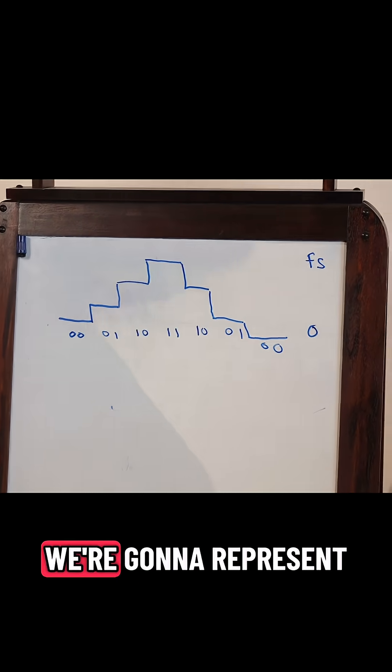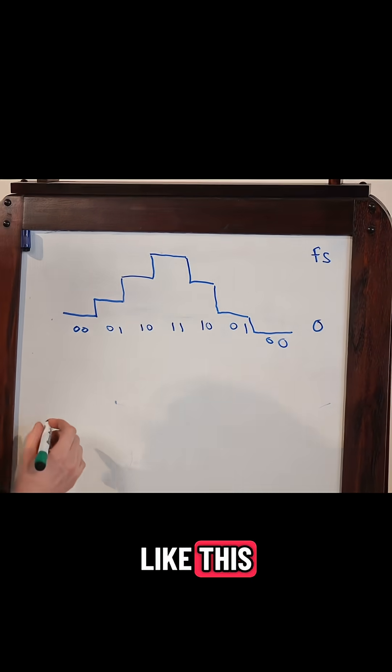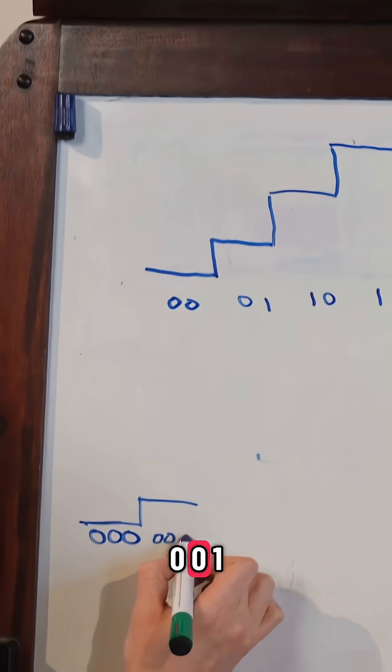So with three bits of audio, we're going to represent a sine wave like this. We're going to have zero, zero, zero. We're going to have zero, zero, one.